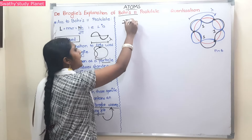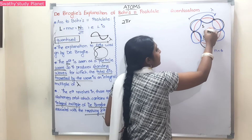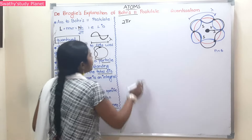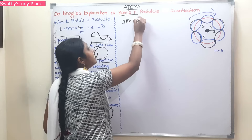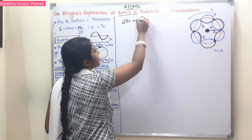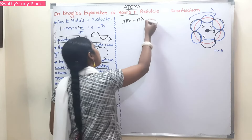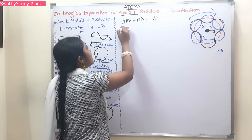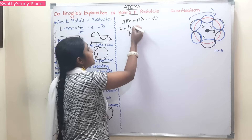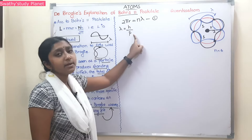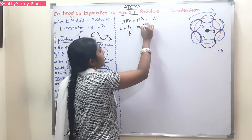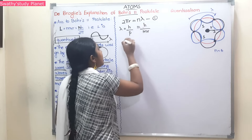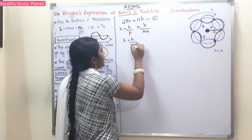This is the total distance traveled by the wave — 2πr, the circumference of the circle. Here is the nucleus at the center, and r is the orbital radius. So equation 1: 2πr = nλ, meaning the total distance is an integral multiple of the wavelength lambda. According to de Broglie's hypothesis, equation 2: λ = h/p, where h is Planck's constant and p is the momentum. The momentum formula is mv, so λ = h/mv.